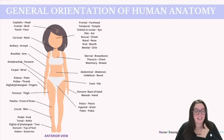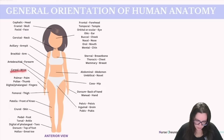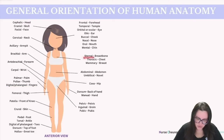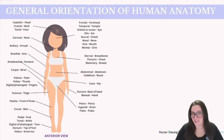Moving down from our neck to our abdomen, we have cervical for our neck; axillary for our armpits; brachial for our arm; antebrachial, which is our forearm; carpal for our wrist; palmar for our palm; pollex for our thumb; or digital or phalange — they're used interchangeably for our fingers. We have sternal for the breastbone; thoracic for our chest; mammary for our breast; abdominal for our abdomen; and umbilical for our navel.